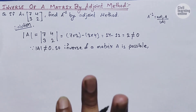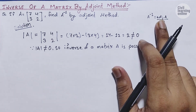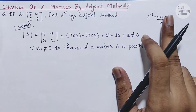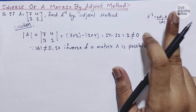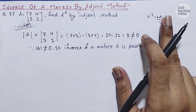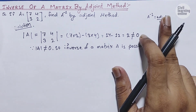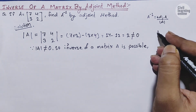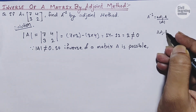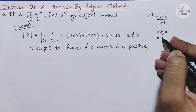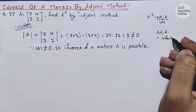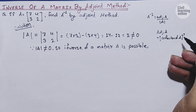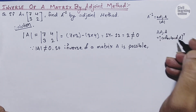Before calculating the inverse, we need to find the adjoint of the matrix. If you have watched my previous video you will easily be able to find it. The adjoint of matrix A equals the transpose of the cofactor matrix of A. So we need to find the cofactor of the given matrix A first.